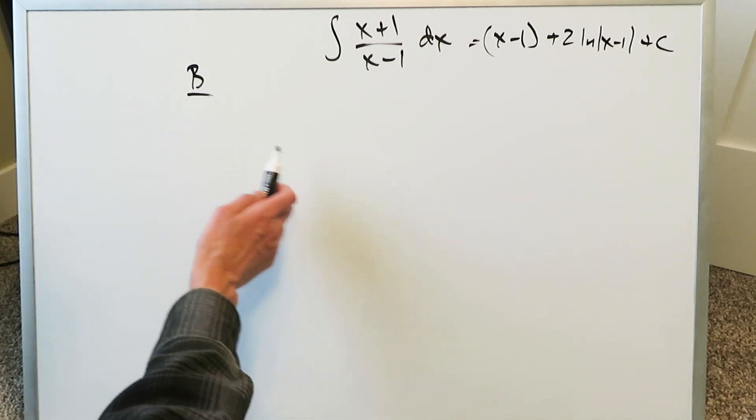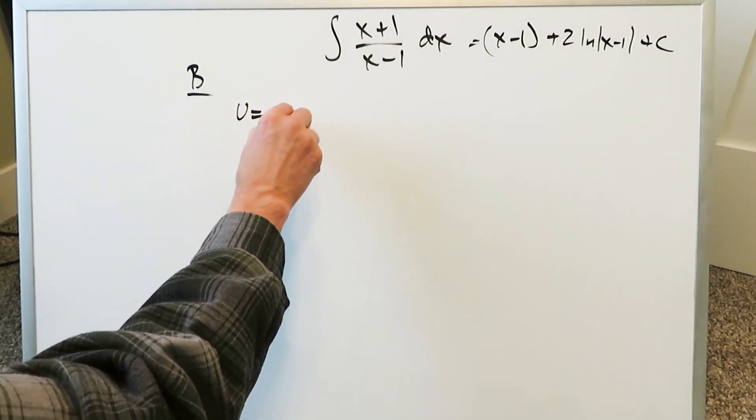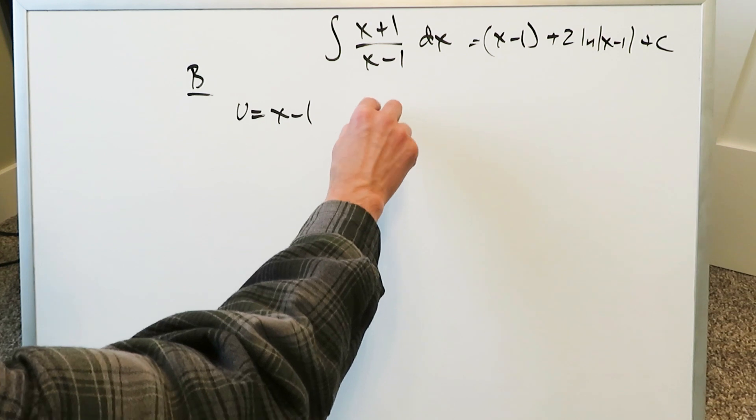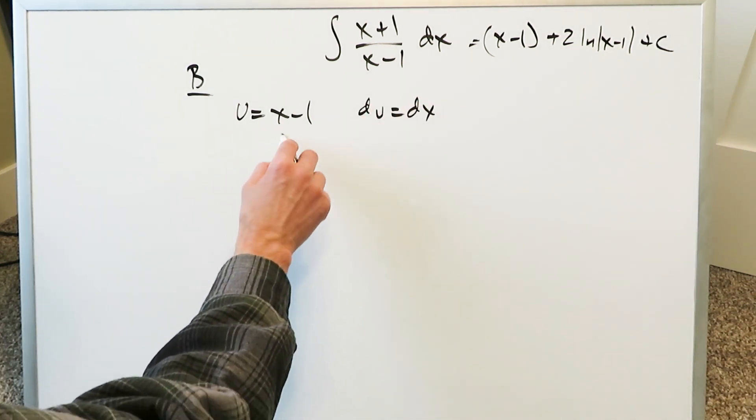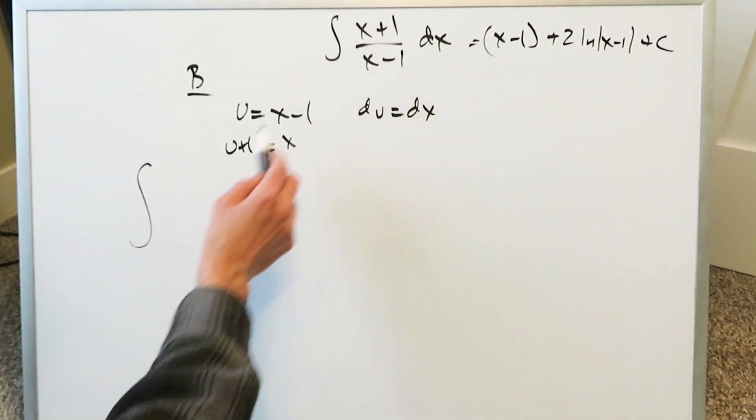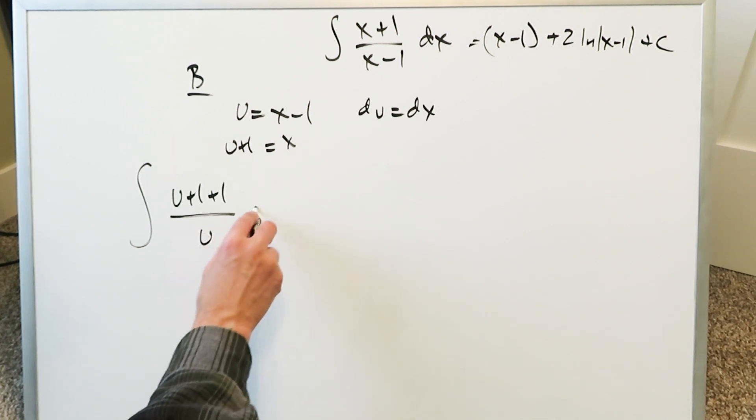But look what happens over here. You do a u substitution from the start. u is equal to x minus 1. The denominator is being substituted. Then therefore du is equal to dx. You can also do an x here. x is equal to u plus 1. And now you bring this into places or u plus 1 plus 1. You already have a plus 1 there. And then you have a u du.